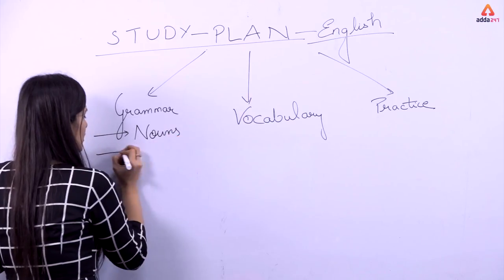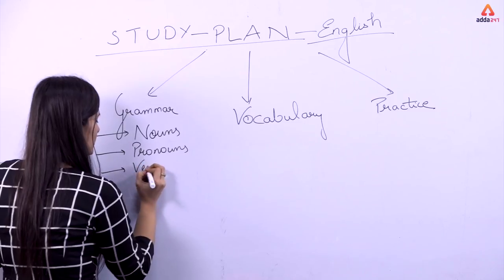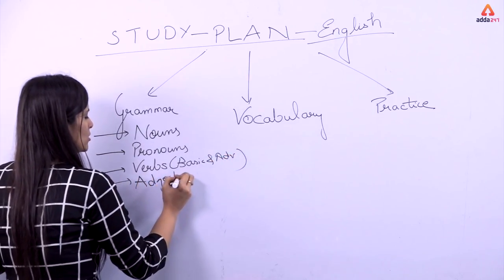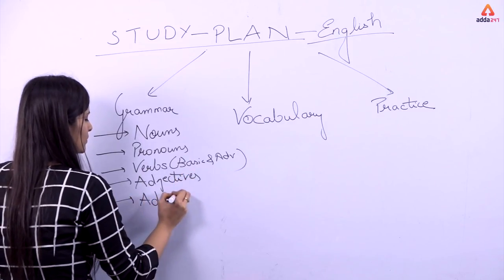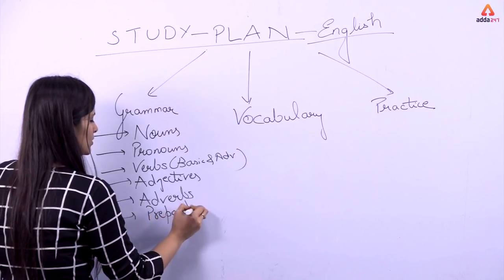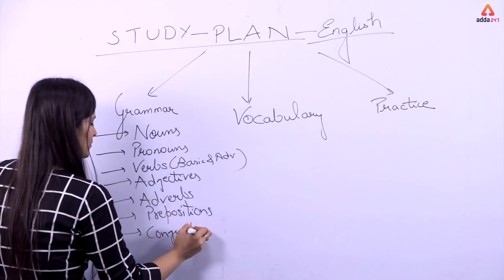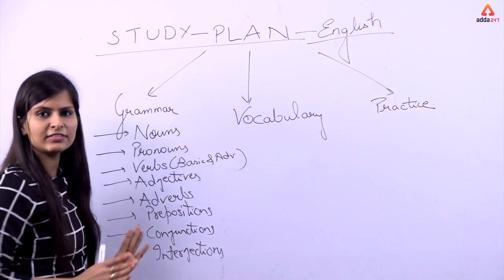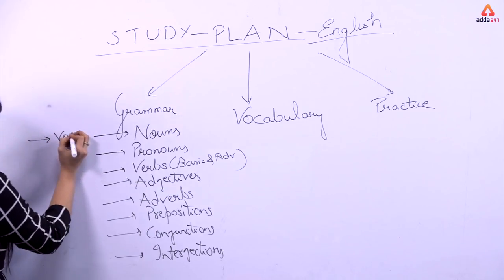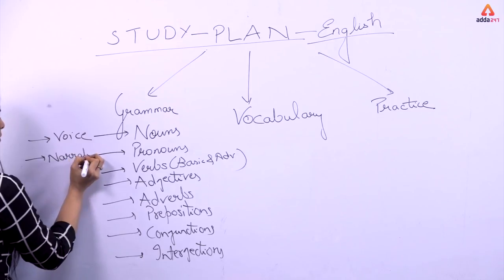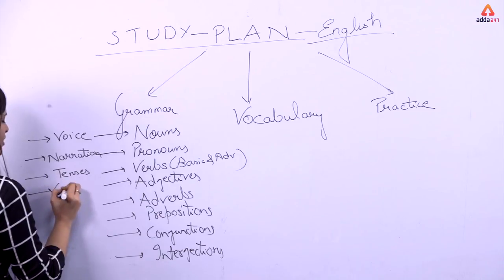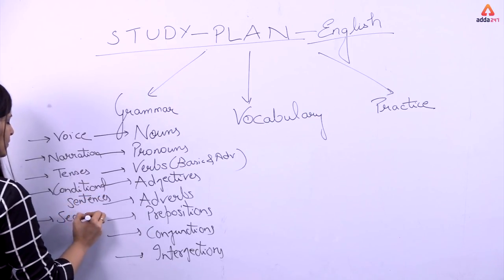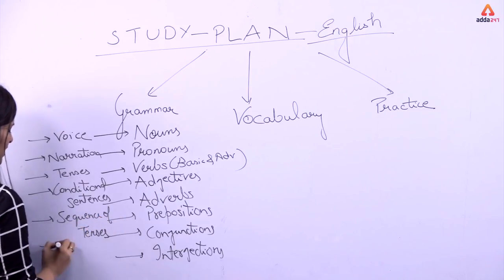In grammar, we have: nouns, pronouns, verbs (basic and advanced), adjectives, adverbs, prepositions, conjunctions, interjections, figures of speech, voice, narration, tenses, conditional sentences, and sequence of tenses.